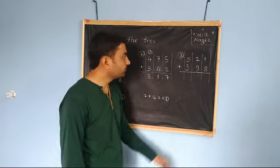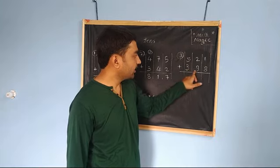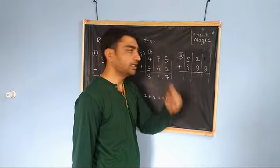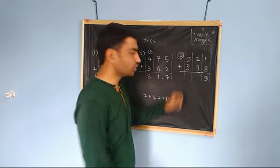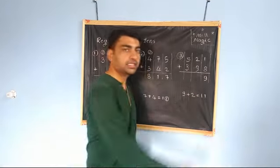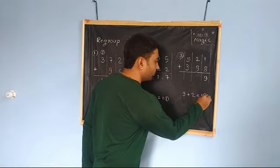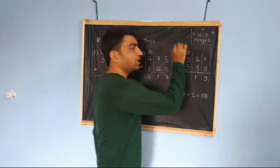Let's see one more example: 521 and 398. So 8 plus 1 is 9. 9 plus 2: here we will get a 2-digit number as an answer. That is 11. So this 1 we will write here, and the next one will be carried to the next place.